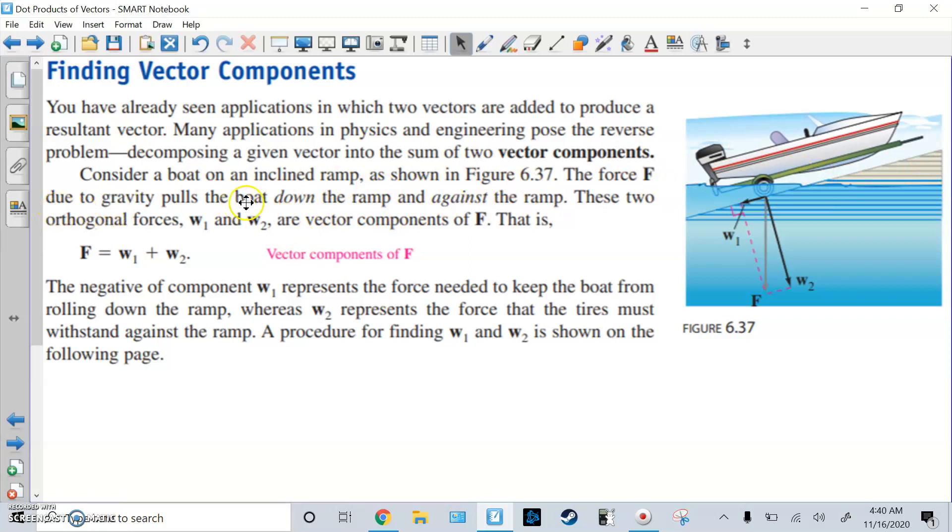does gravity pull the boat down? That's what we know, F. And we're trying to figure out what W1 and W2 are. Alright, W1 is the component that represents the force needed to keep the boat from rolling down the ramp. While W2 represents the force that the tires have to withstand from being on the ramp, the normal force. Alright, but the force, total for itself, is these two added together. Because we do W1 plus W2. So the end of W1, and just add W2 to it, and get to this F, the final resultant.